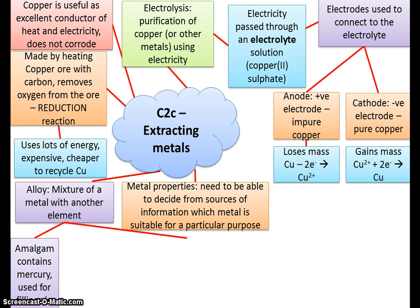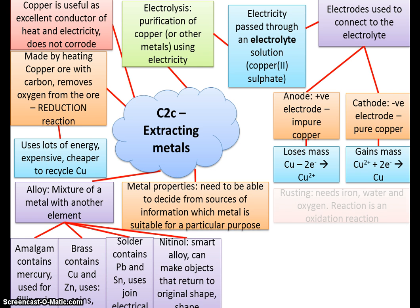If you remember about atom structure, if you take away some of the negativeness you create a positive ion. At the cathode — the negative electrode — this is where your pure copper is going to be gained, as the copper attaches to the cathode and has electrons added to make pure copper. The impurities are just left at the bottom of the beaker.